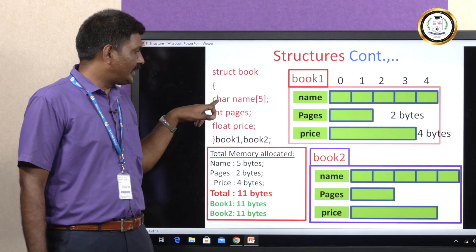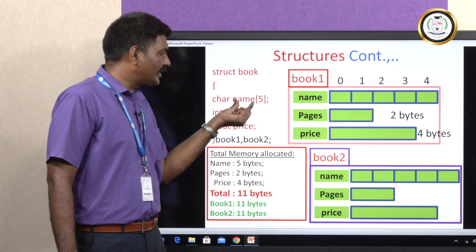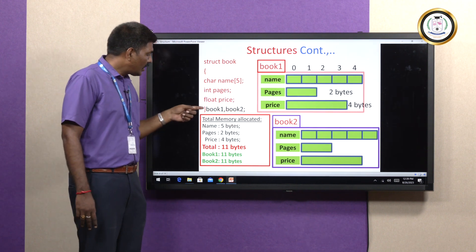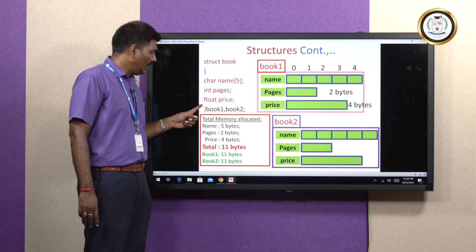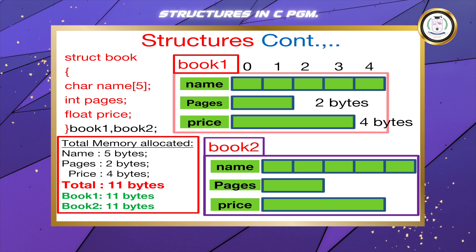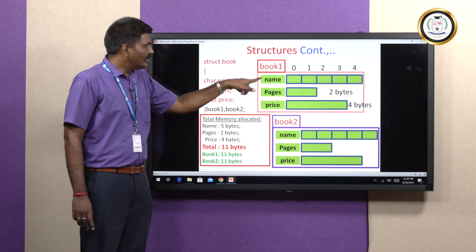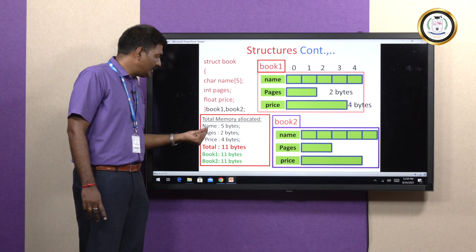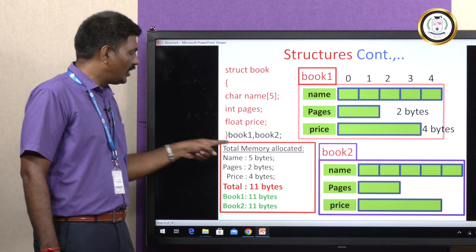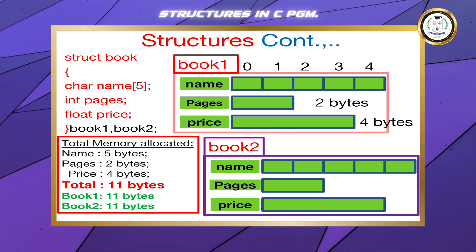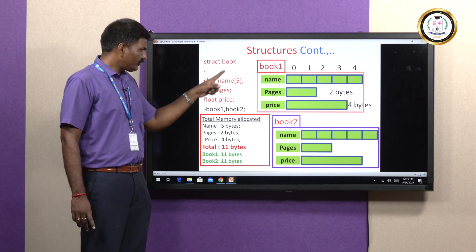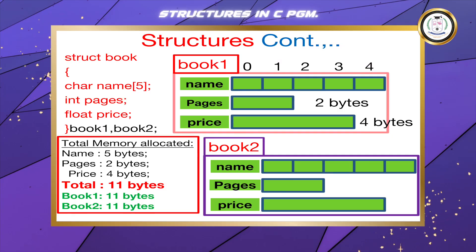For object creation, after closing the structure, we create book1 and book2. Based on book1 and book2, I created the memory structure here. Book1 has: name, page number, price. Book2 also has: name, page number, price. To calculate total memory allocated: name is 5 bytes, page number is 2 bytes, price is 4 bytes — so book1 is allocated 11 bytes, book2 is allocated 11 bytes. For this structure, we are allocating 11 plus 11 equals 22 bytes of memory.